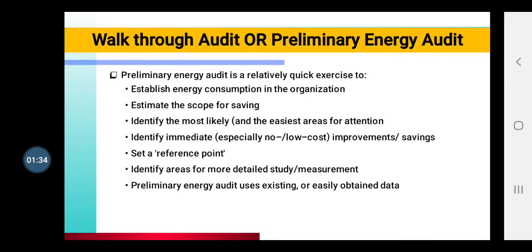In the preliminary energy audit, first you have to establish an organization — you have to set up an energy consumption organization. Second, identify where the scope of saving is, where you can save energy by changing appliances — you have to estimate that, meaning calculate the scopes of saving. Third, identify where in the easiest way you can change an appliance and conserve energy — give attention to that first.